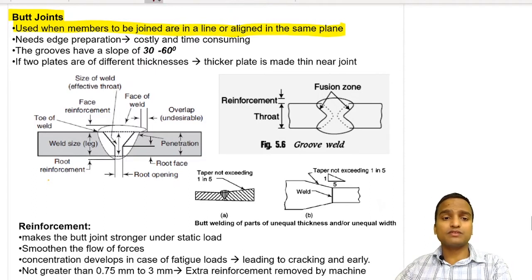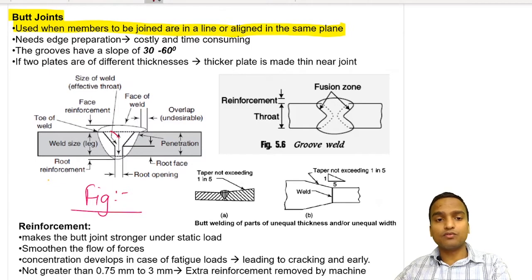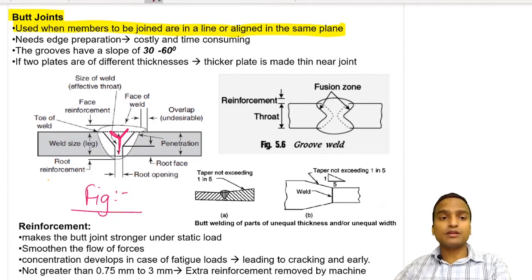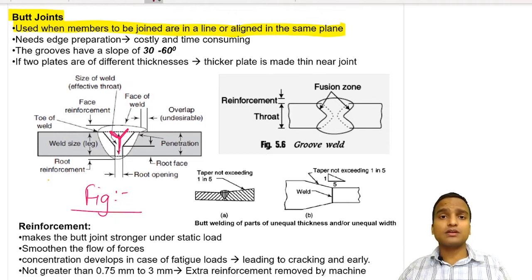In this figure, both members to be connected are in the same line, and we have made a groove of Y shape. Grooves can be of different shapes: V shape, J shape, K shape, or X shape. For making a butt joint we have to do edge preparation, because only in the edges or grooves do we fill the weld — that's why butt welds are also known as groove welds.